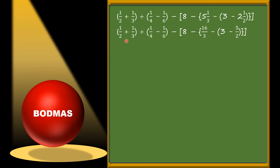Now we focus on only the small brackets. In the first small bracket we do addition of fractions. In the second we do subtraction. In the third also subtraction. For different denominators we find the LCM. For 2 and 3, LCM is 6. For 4 and 6, LCM is 12. For 3 and 2, LCM is 2. So we solve accordingly.